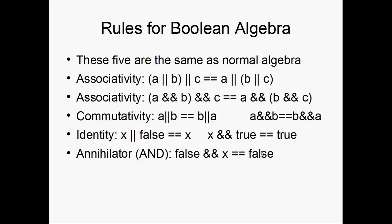So there are a few simple rules of Boolean Algebra. And the first five that I'm going to show you here are going to be the same as normal math. Associativity, you can think of... First of all, for all these five, you can think of ORs as plus signs and ANDs as multiplication signs. So (a || b) || c is going to be the same as a || (b || c). Associativity, same concept. Just take a look at the slide.